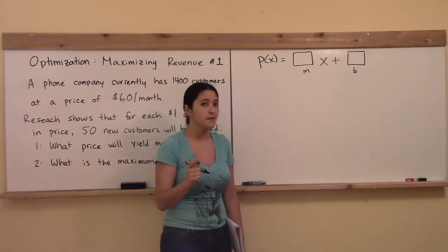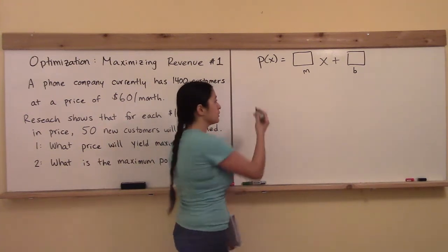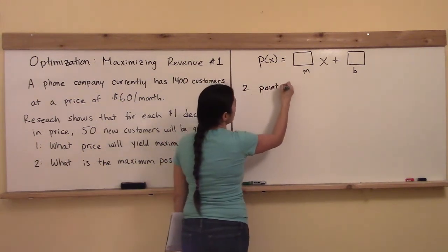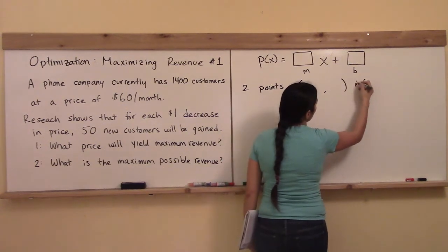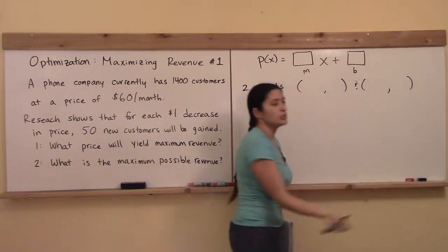Now if you got stuck on this, the first step was going to be to write down two points and then we're going to do all our line stuff that we learned last quarter on those two points and then we should be good to go.